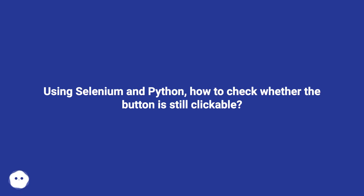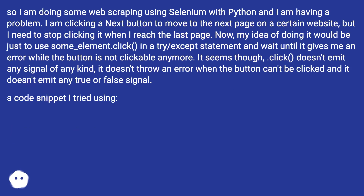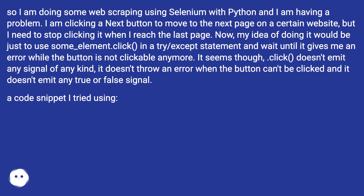Using Selenium and Python, how to check whether a button is still clickable. I am doing some web scraping using Selenium with Python and I am having a problem. I am clicking a Next button to move to the next page on a certain website, but I need to stop clicking it when I reach the last page. My idea of doing it would be just to use element.click() in a try/except statement and wait until it gives me an error.